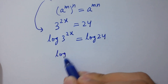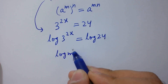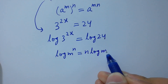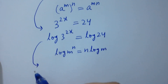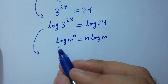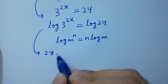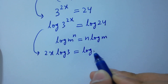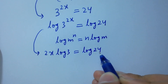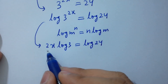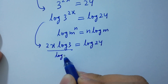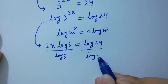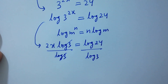Using log m to the power n equals n log m, we get 2x log 3 equal to log 24. Divide by log 3 on both sides — log 3 and log 3 cancel.